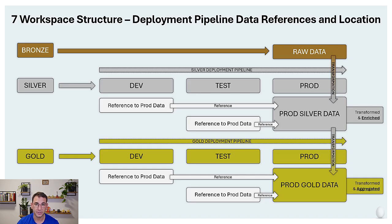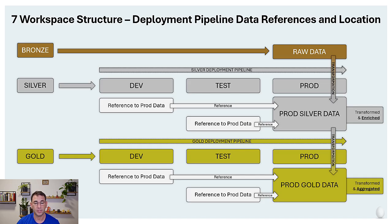When we reference data from dev and test stages to the prod data, our notebook dynamically checks which workspace ID we are working in and references the data location in the prod workspace lake house. This means it automatically knows where to read data from when deploying between dev and test. The bronze layer is a separate workspace, which can be justified by governance, administration, or security purposes — restricting user access or even applying a domain for additional data security.